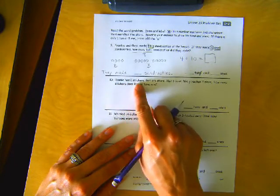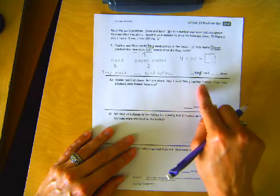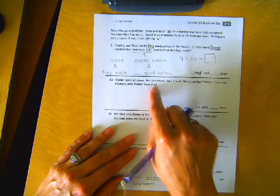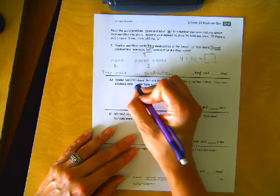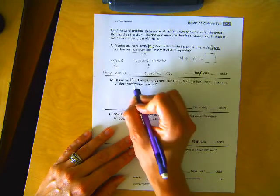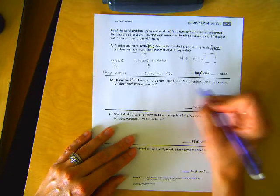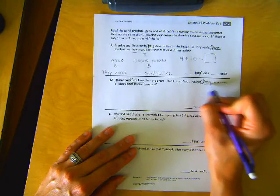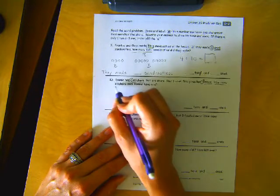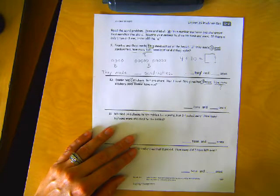Here's number ten. Ronnie has eight stickers that are stars. Her friend, Sina, gives her seven more. How many stickers does Ronnie have now? Okay. She has eight stickers. Her friend, Sina, gives her seven more. How many? We don't know.